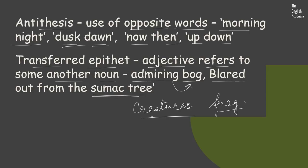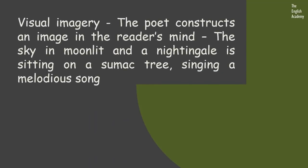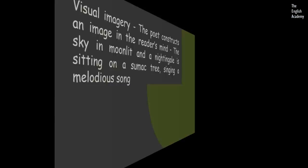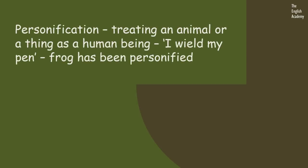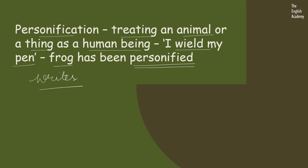The next device is visual imagery, where the poet constructs a scene in the reader's mind. When he says the sky is moonlit and a nightingale is sitting on a sumac tree singing a melodious song, a scene is set in front of the reader. The next device is personification — treating an animal or thing as a human being. When the frog says 'I wield my pen,' the frog is writing just like human beings write, giving a human quality to the frog. So the frog has been personified.